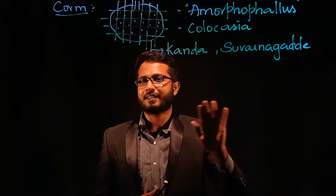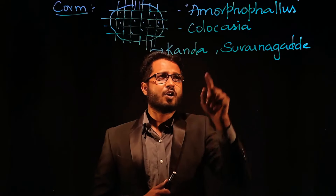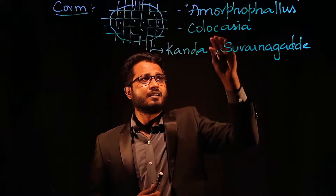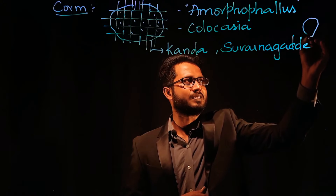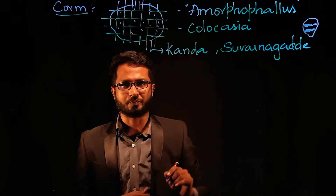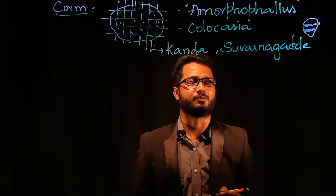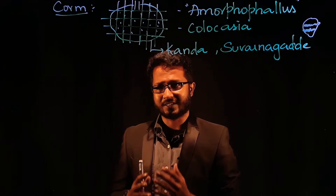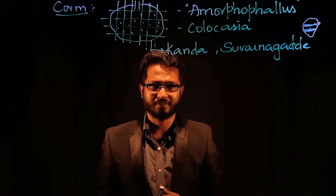Amorphophallus is world's tallest flower, but here we are talking about an Indian variety used as a vegetable. Colocasia is also used — in curries it tastes like potato but smaller. It has nodes and internodes on itself. The reason we place it under corm rather than rhizome is the presence of buds on its body, which give rise to new plants. That is about underground stem modification, covered in detail for NEET.